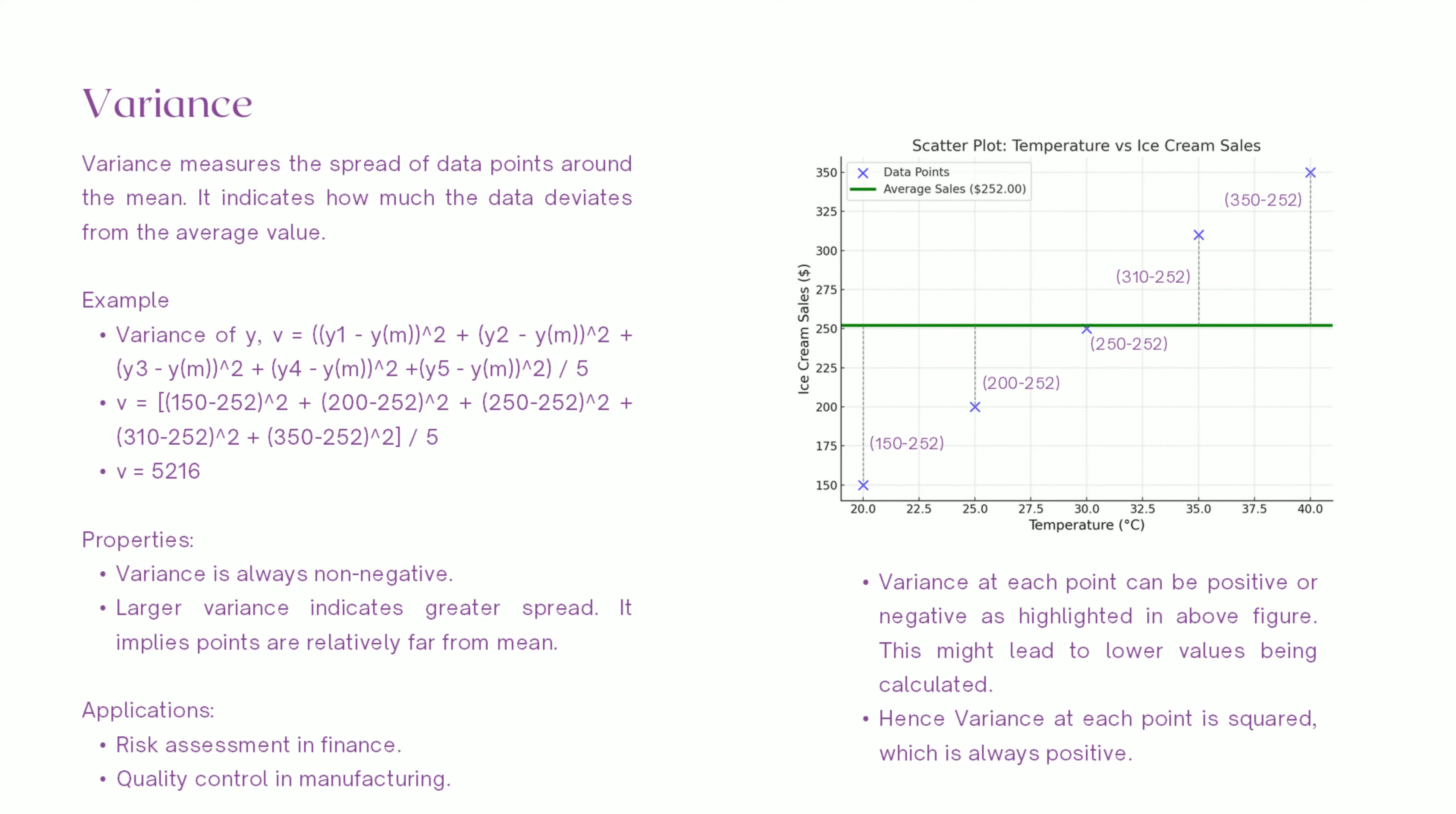Now, let's dive deeper with variance. If the mean is about the center, variance is about the spread. Variance tells us how much data points deviate from the mean. The formula might look intimidating, but let's break it down: V equals sum of square of difference between data and its mean divided by number of data points.